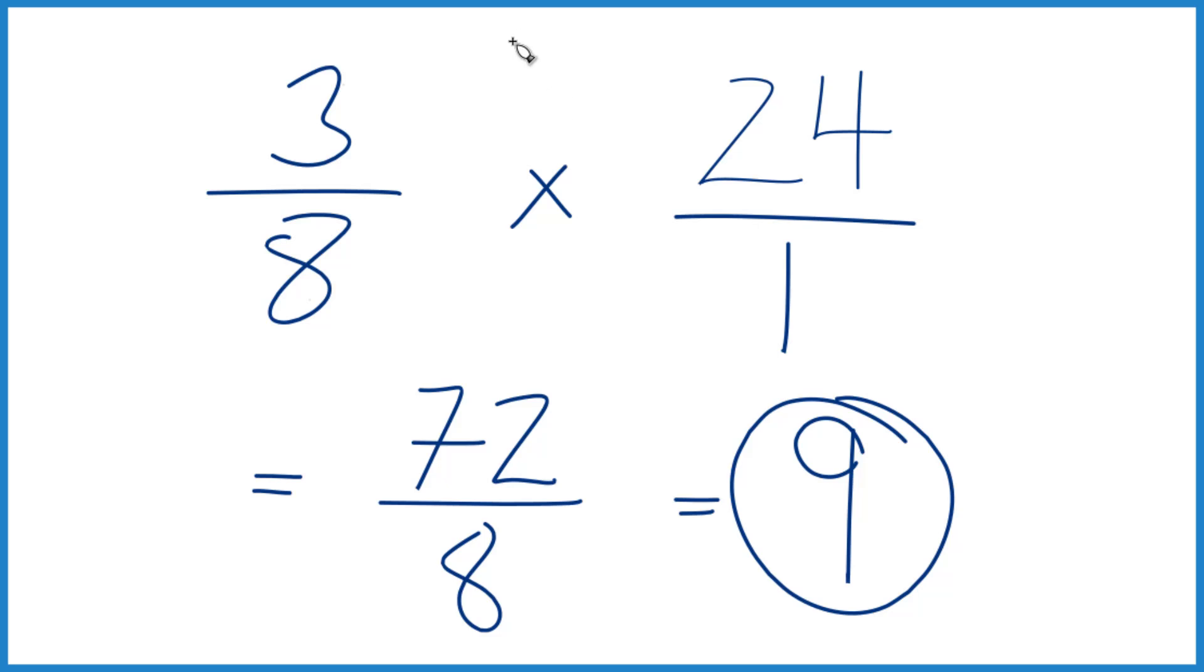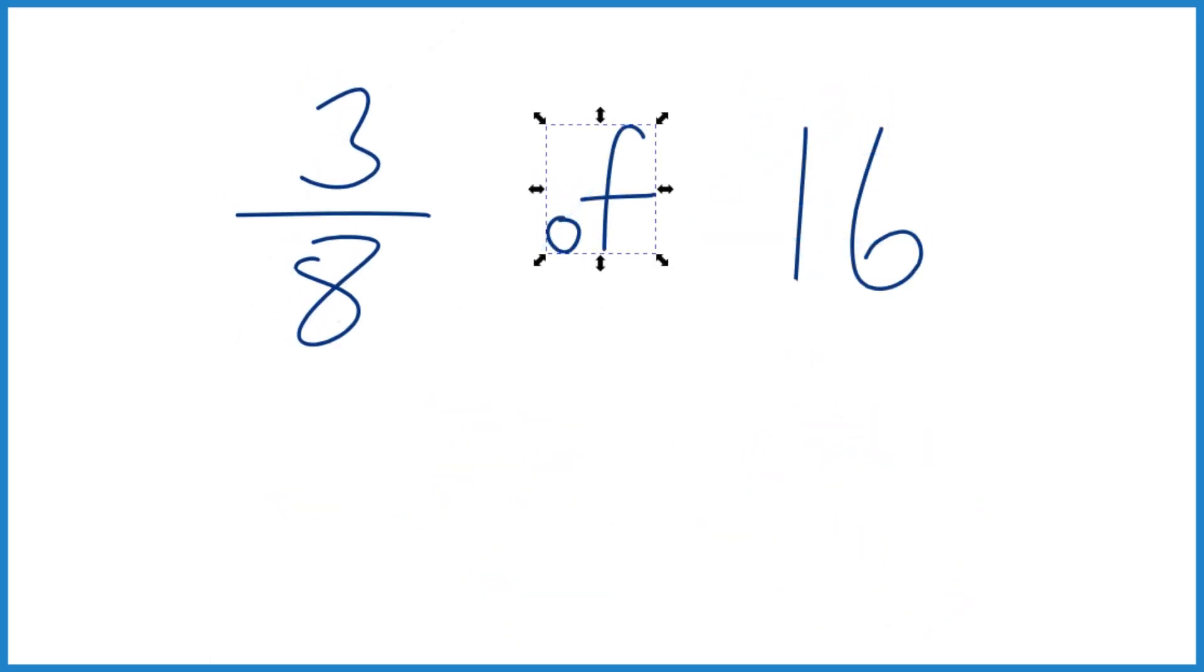So what we did was instead of of, we used multiplication. Then we put this number over 1 so everything lined up, and we got our answer. Let's try another one. So pause. See if you can figure out 3 8ths of the number 16.